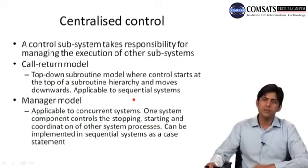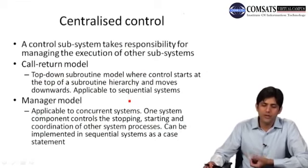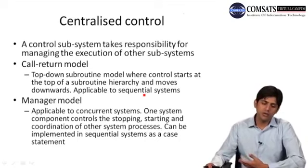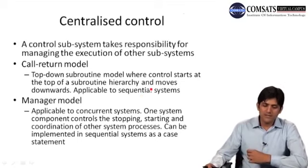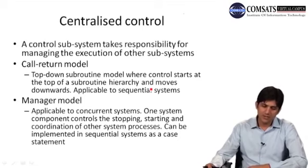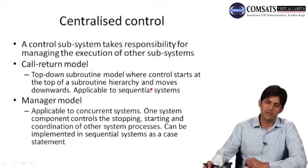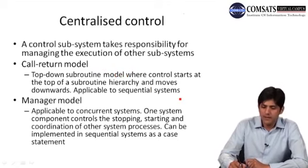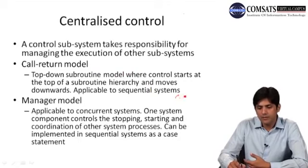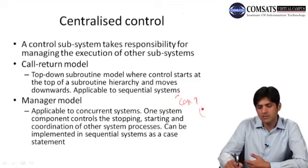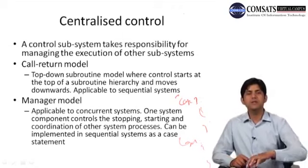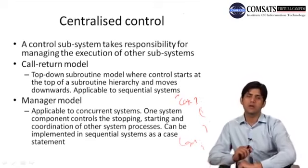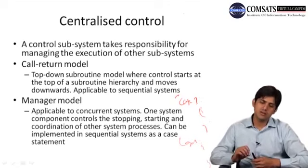The manager model is applicable to concurrent systems. One system component controls the stopping, starting, and coordination of other system processes. In sequential systems it can be implemented as a case statement — like a switch statement where the manager decides which case to execute based on input. An example is real-time system control where we have a central system controller. Whenever the user has an interface with it, or sensors provide input, it will give an alert or manage the response accordingly — a central system dealing with the rest of the system.